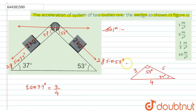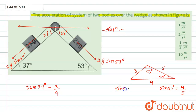From this arrangement, the force 2g sin(53°) — we can write that sin(53°) equals 4 by 5, and sin(37°) equals 3 by 5.